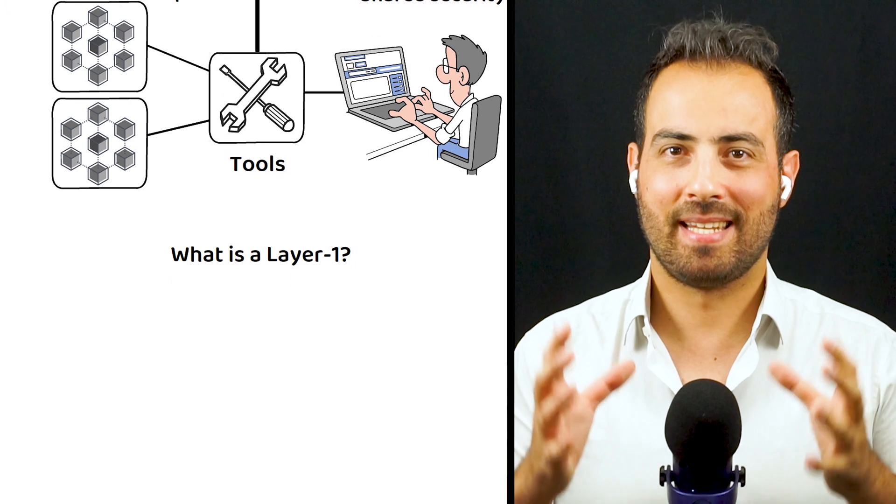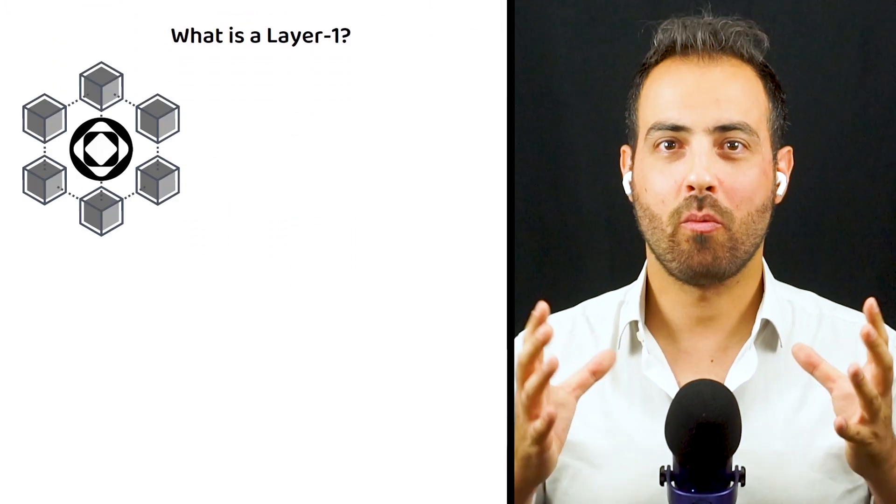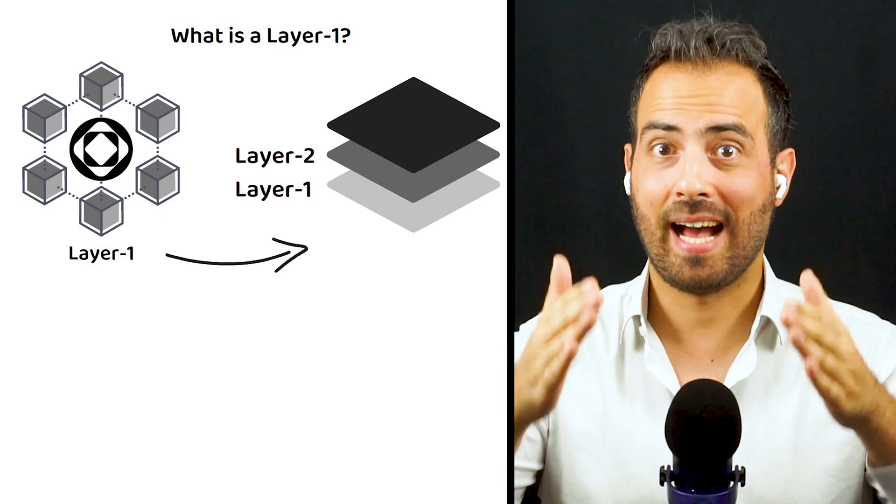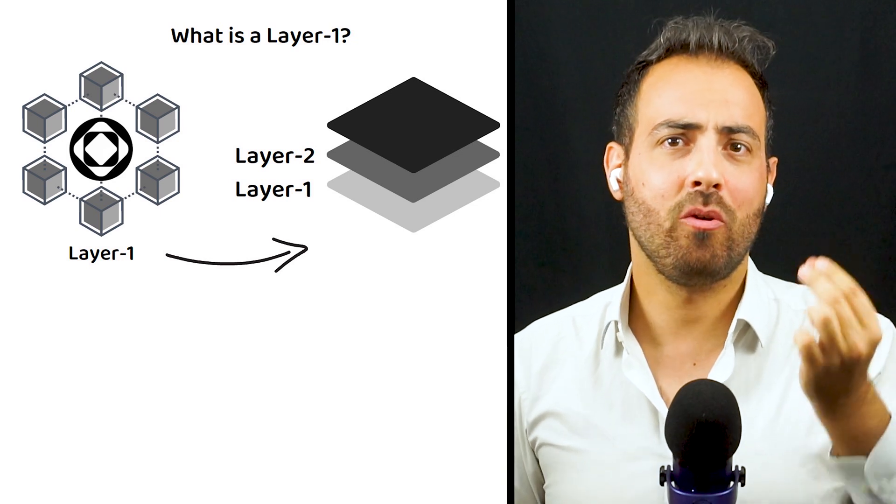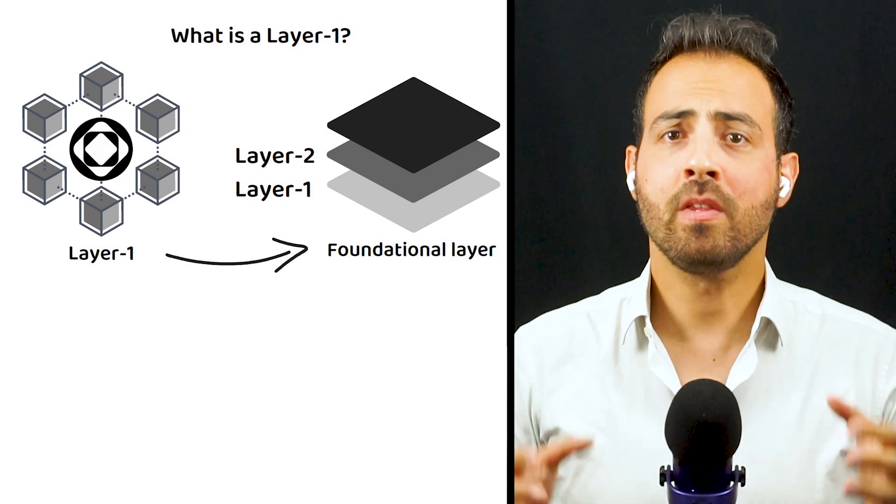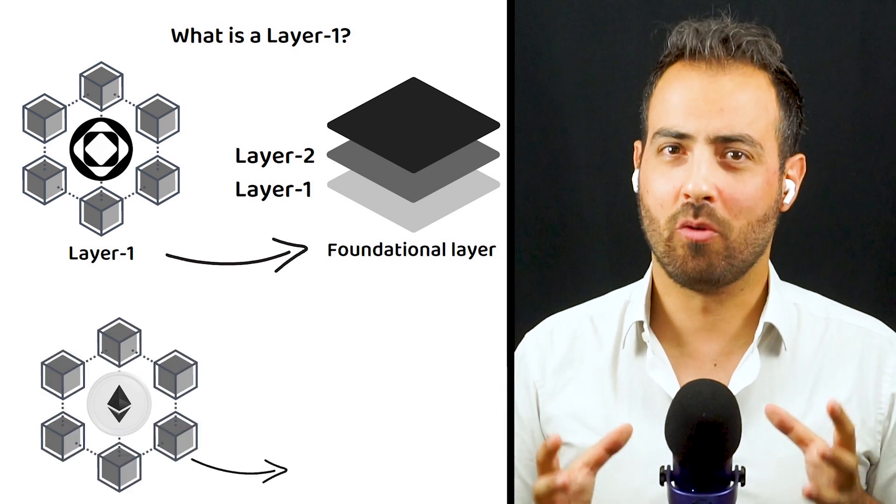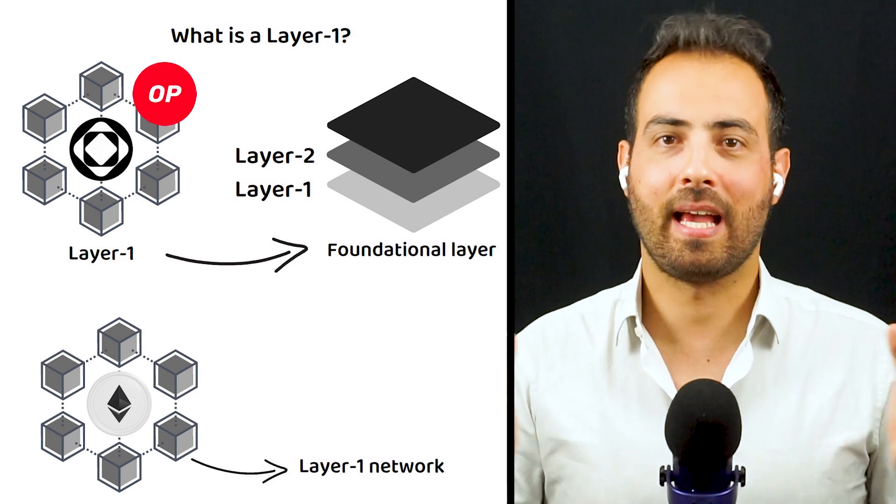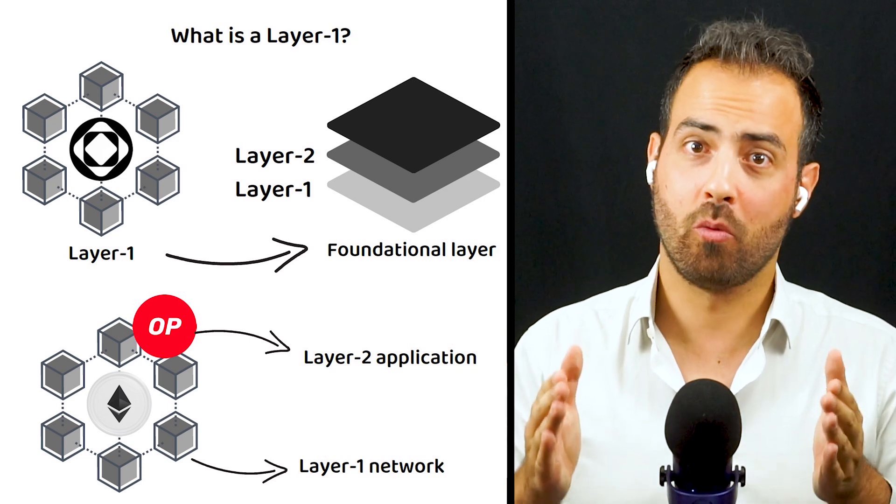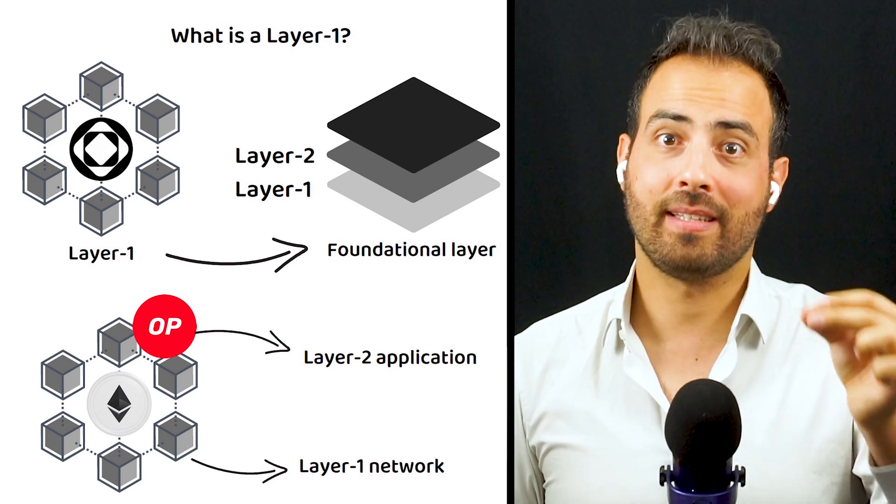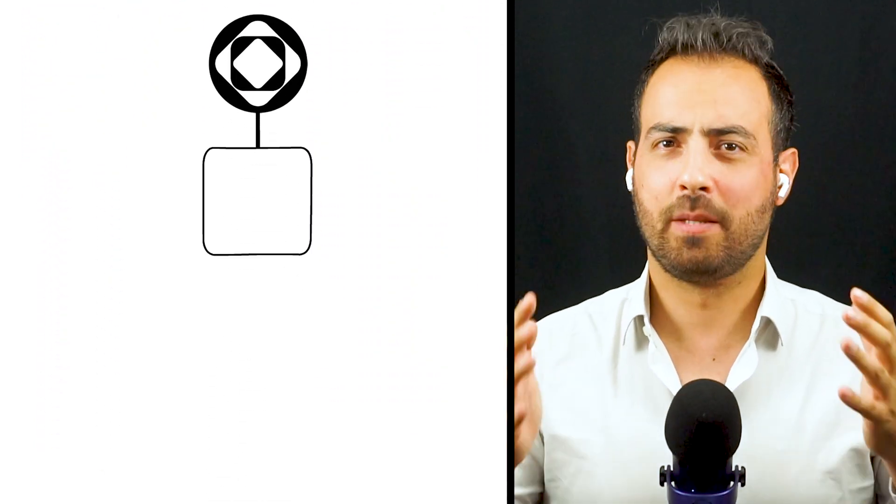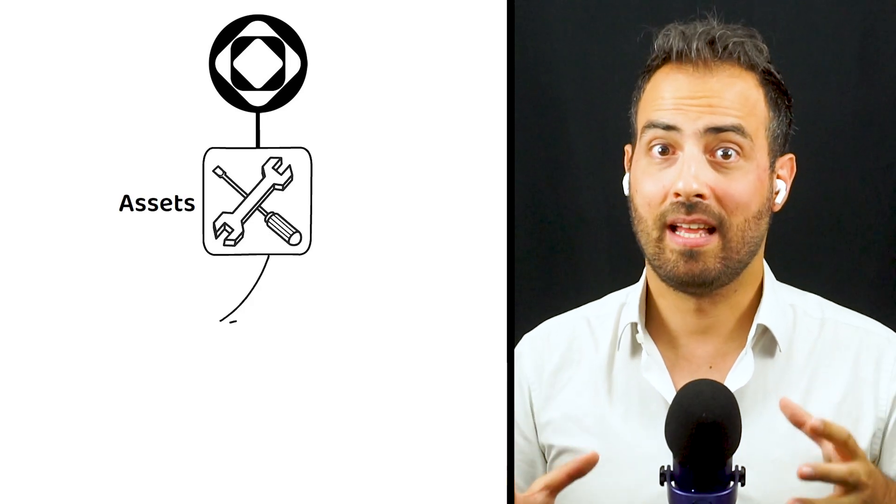As I mentioned previously, Saga is a layer one blockchain. Layer one refers to the position within the blockchain hierarchy—a layer one is typically the foundation layer from which all other blockchain components are built. As an example, Ethereum is a layer one network, whereas something like Optimism would be a layer two application, as it works on top of Ethereum and is designed to complete a specific task for the Ethereum network. As Saga is a layer one, it provides the assets for developers to build their own layer one blockchains, which they refer to as chainlets.